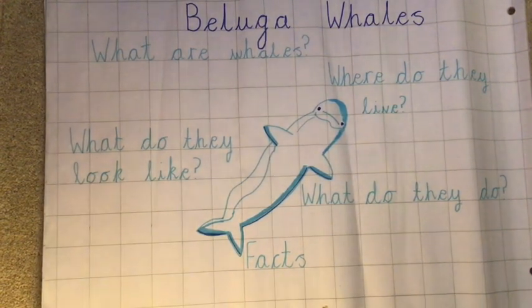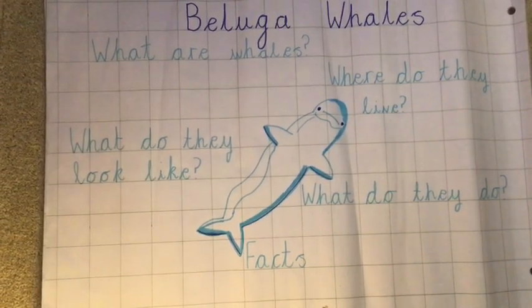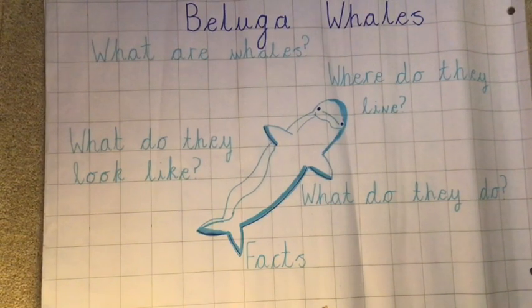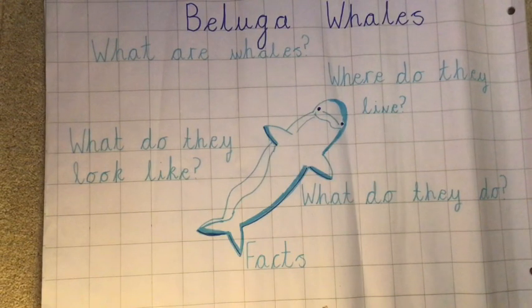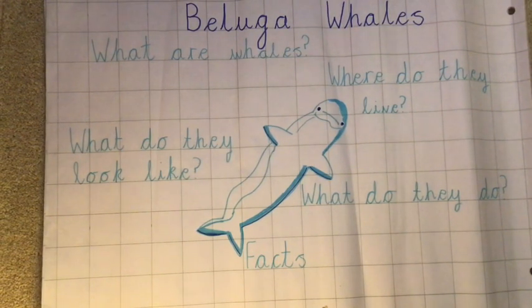Pause the video now and tell your grown-up what I need to remember to include in my writing. Did you remember all the things we need to include? Capital letters, clear finger spaces, sounding out really carefully, nice neat handwriting and full stops when we're writing in full sentences. But we're actually just going to be writing notes, so they're just going to be short phrases today. I still need to use my sounds really carefully and make sure I form my letters really neatly.